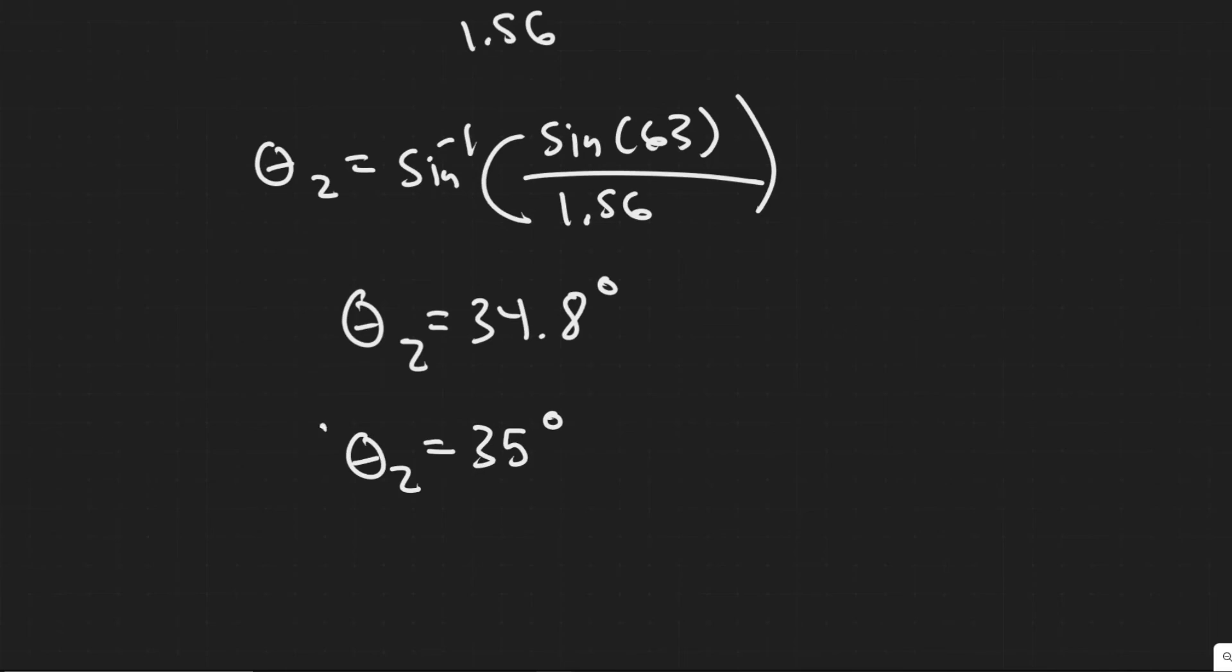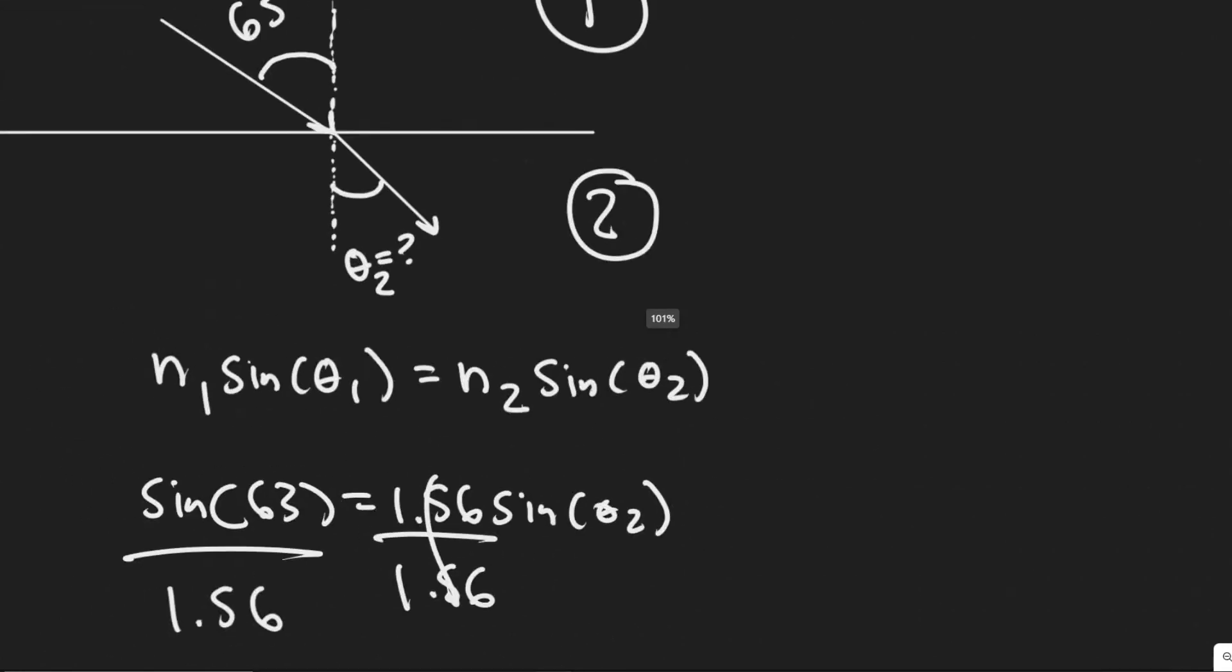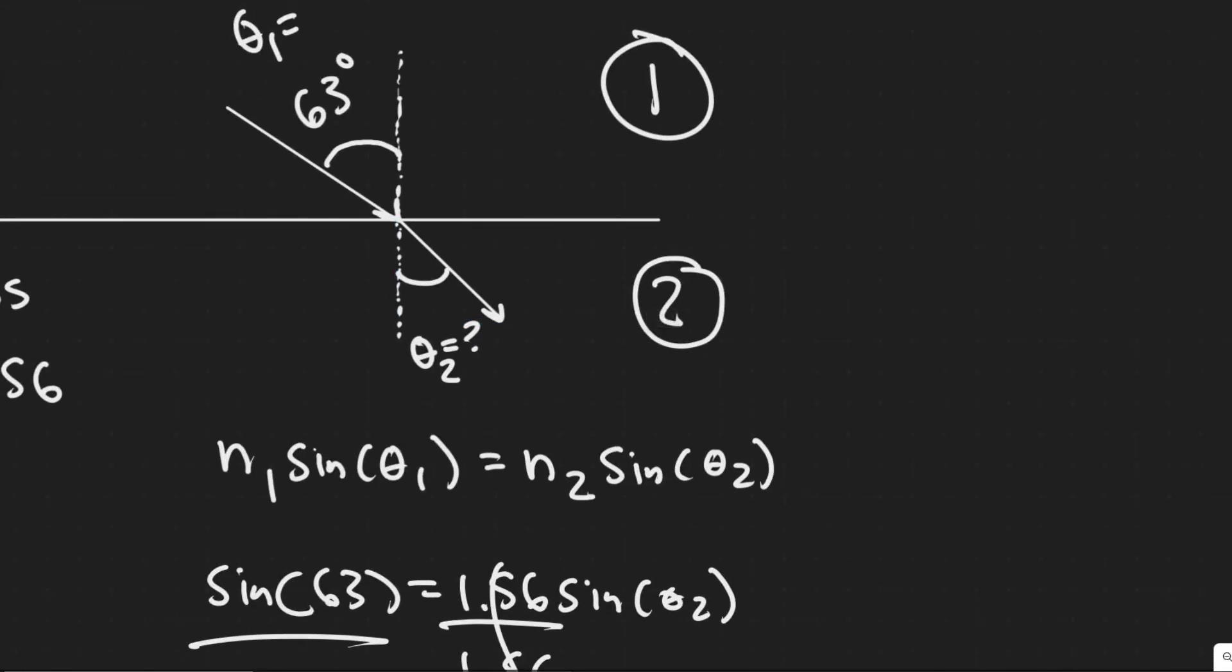I'm just going to round to 35. Just make sure you round how your teacher wants you to. But your angle theta is going to be 35 degrees. So this right here is going to be 35 degrees. So your angle of refraction, 35 degrees.